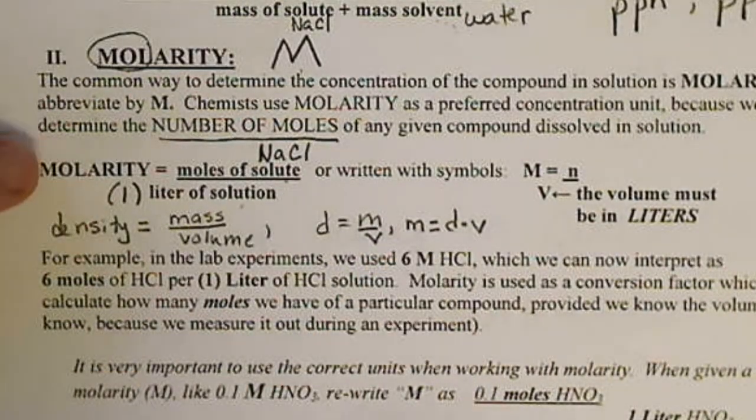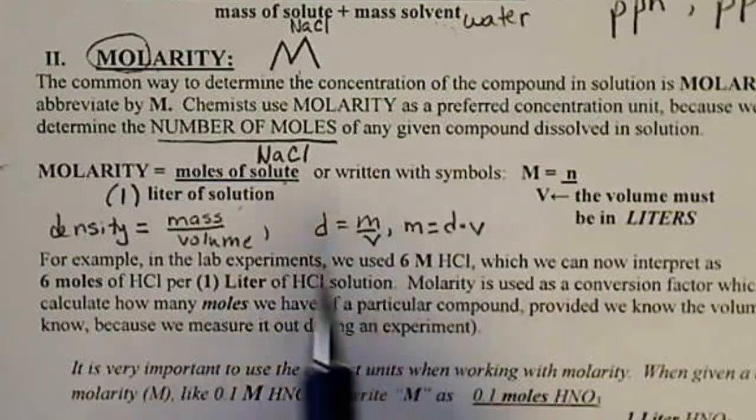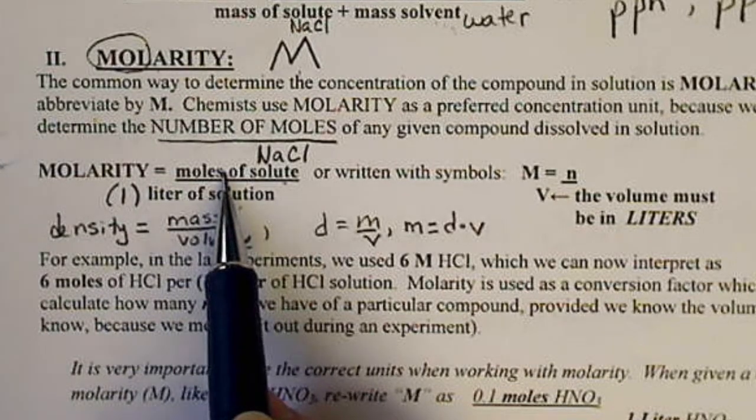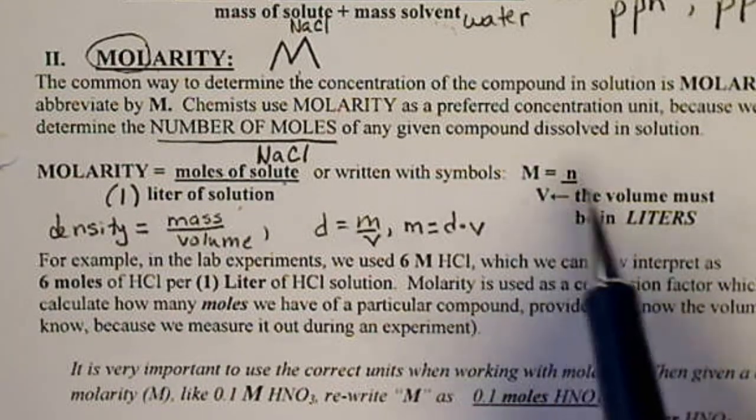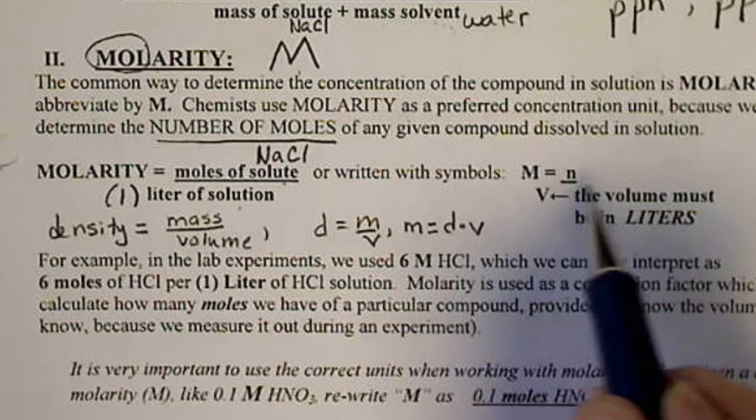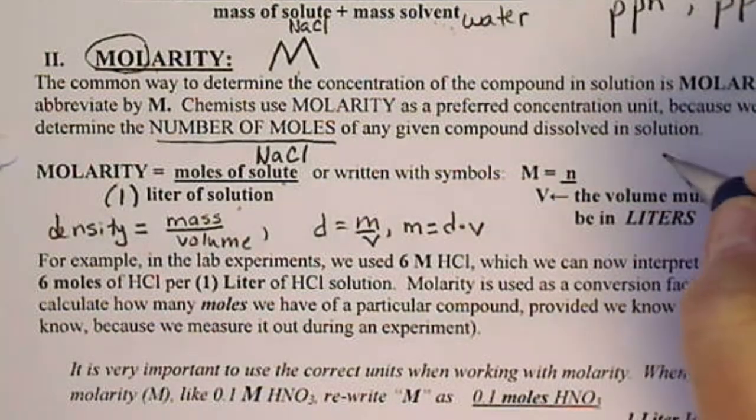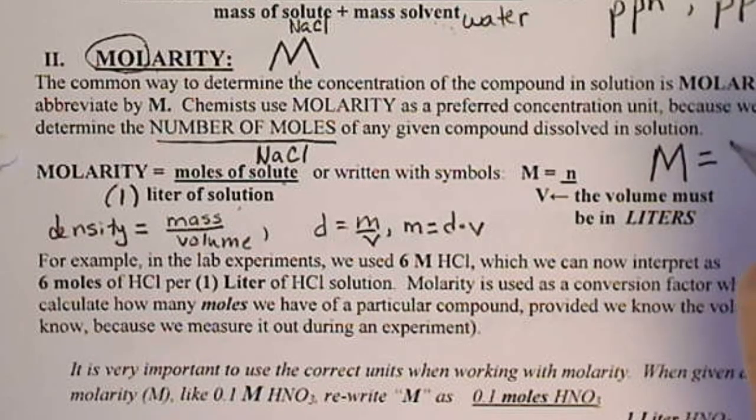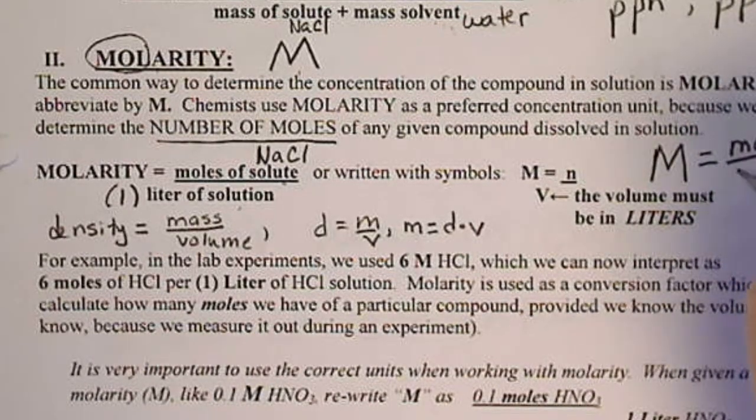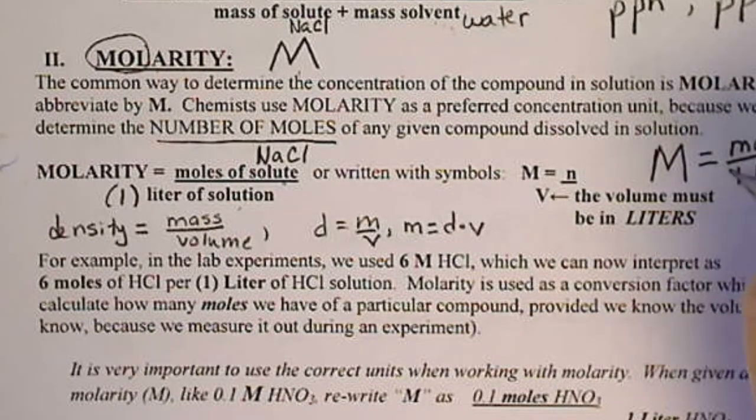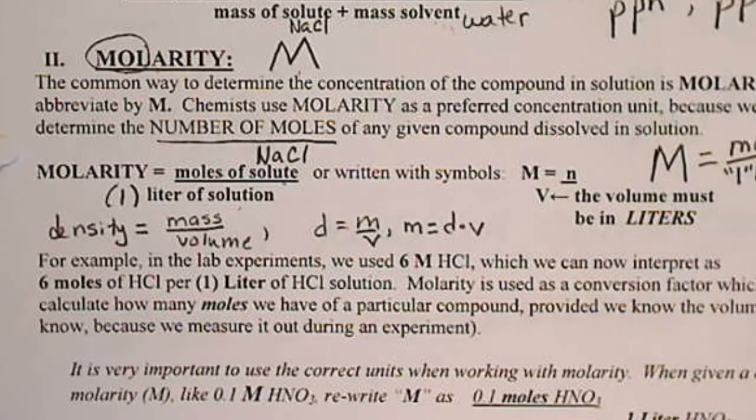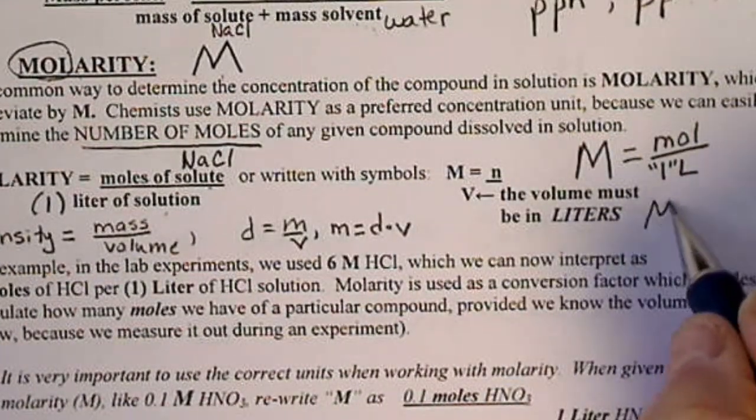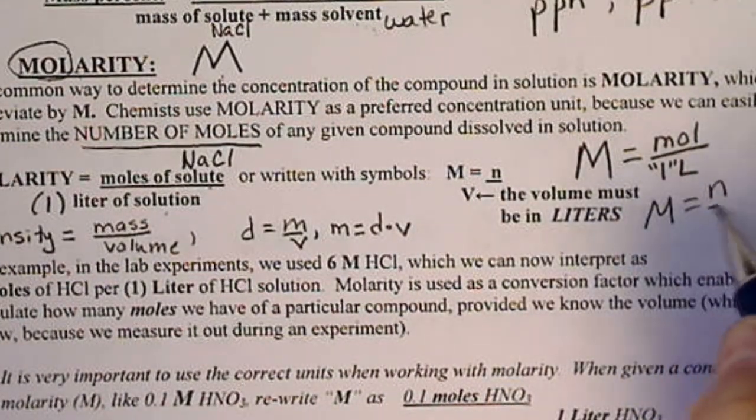So molarity is very similar to density, except the numerator, instead of being mass, is moles. And we could write this algebraically. So M is molarity. That equals moles per one liter. And we don't write the one there. And the symbols we could use M equals n over V.